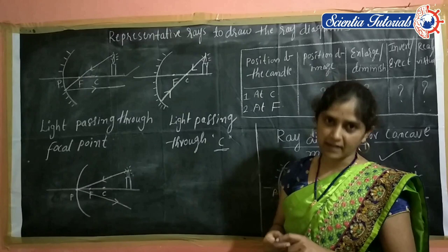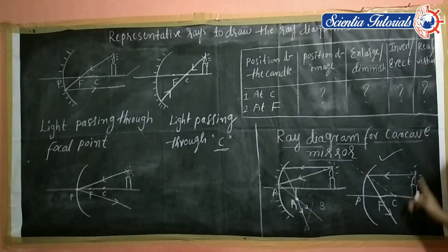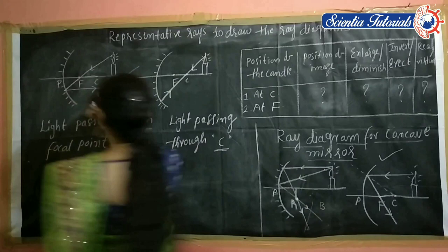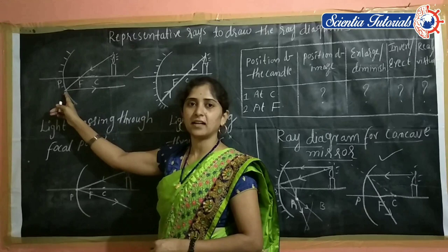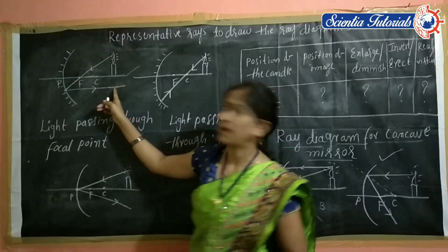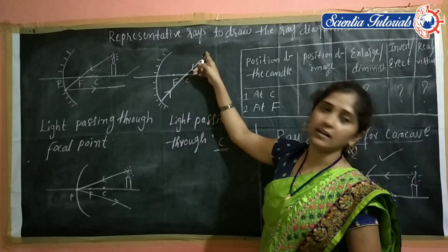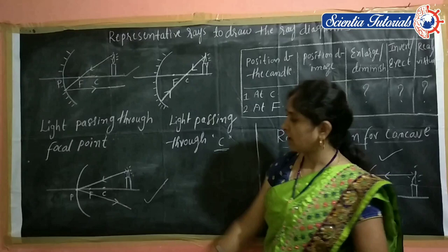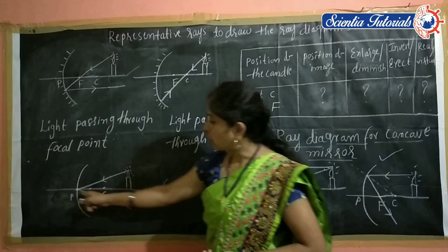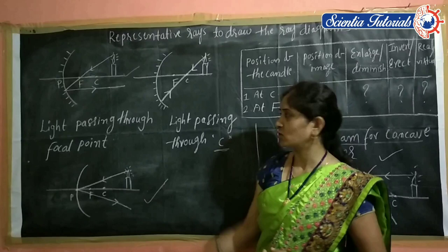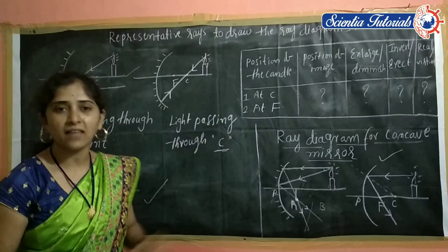To summarize the representative rays: first, the light ray parallel to the principal axis reflects through the focus. Second, the light ray passing through the focus and falling on the concave mirror reflects parallel to the principal axis. Third, the light ray passing through the center of curvature reflects back in the same direction through the center of curvature. Fourth, the light ray falling on the pole reflects, and the principal axis acts as the normal. These are the representative rays we use to draw ray diagrams for both concave and convex mirrors.